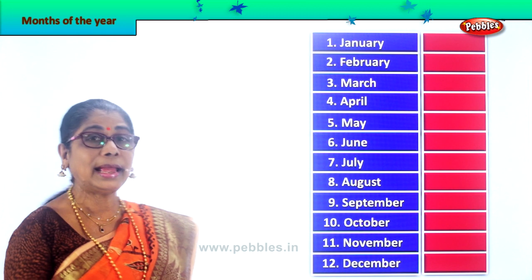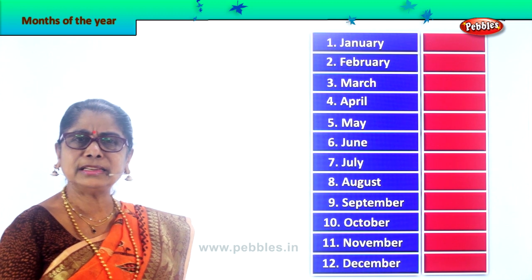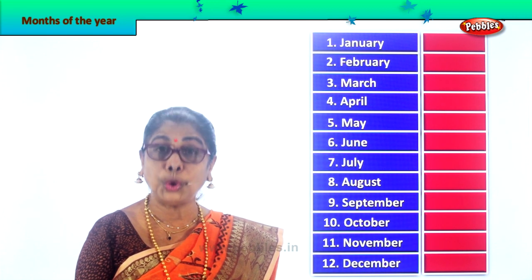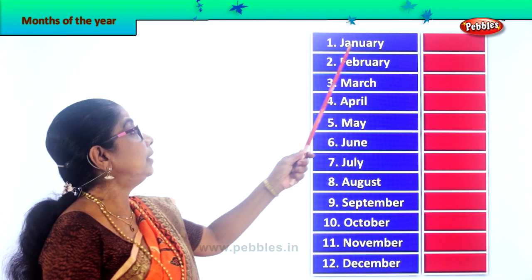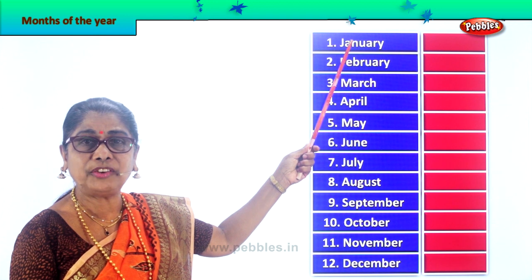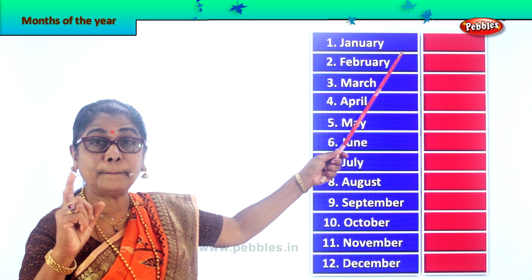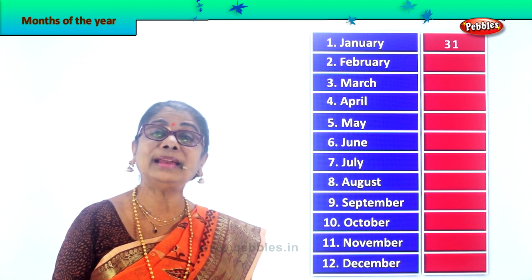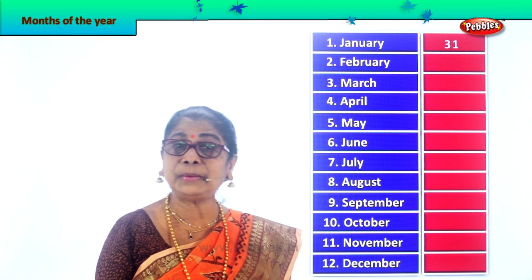Each month has a different number of days. If you look at the calendar, some will have 31, 30, 31, 30 — it goes on. So we need to know which month has how many days. The first month of the year is January. Can you spell January? J-A-N-U-A-R-Y, January. The month of January is the first month of the year and it has 31 days.